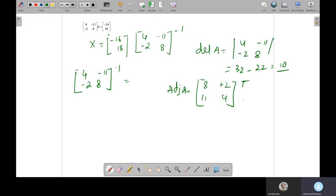Then transpose of it. Transpose of events, row will be column. So 8, 2, negative 11, 4. So this is your matrix.